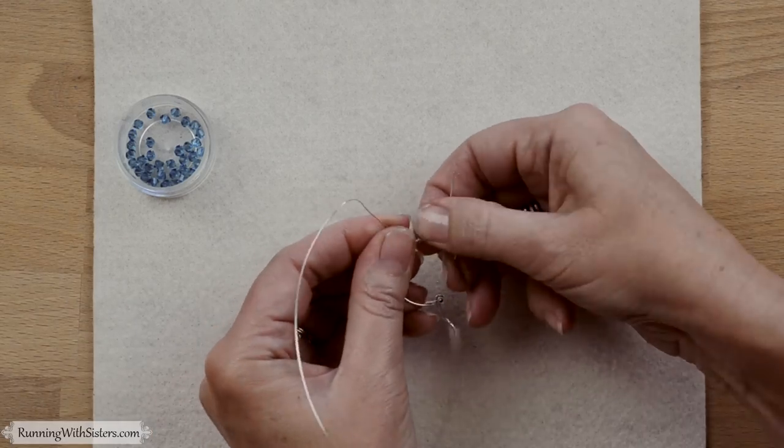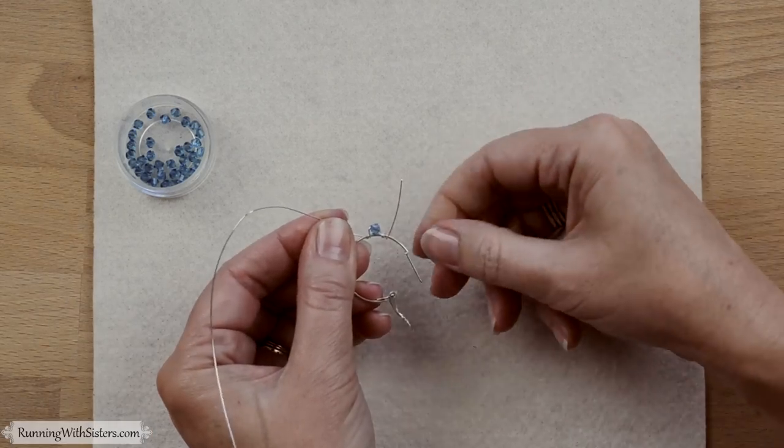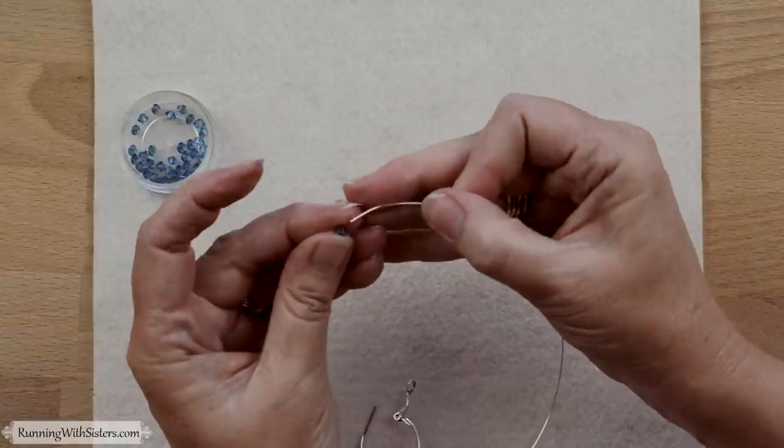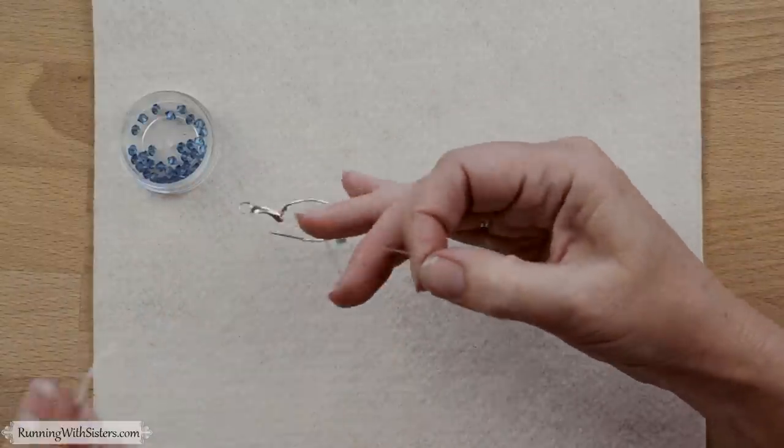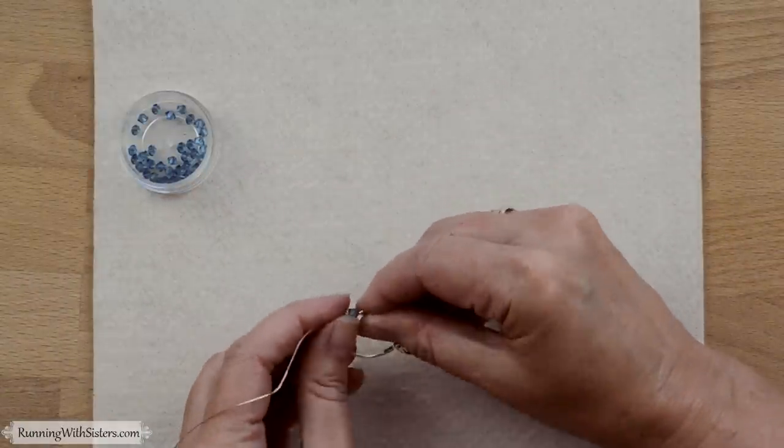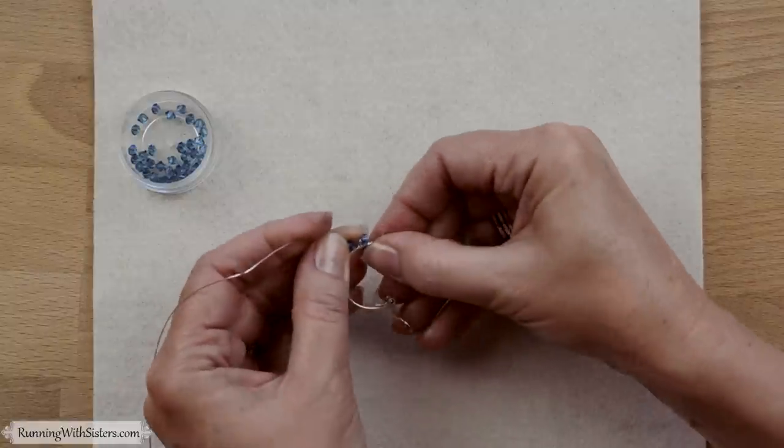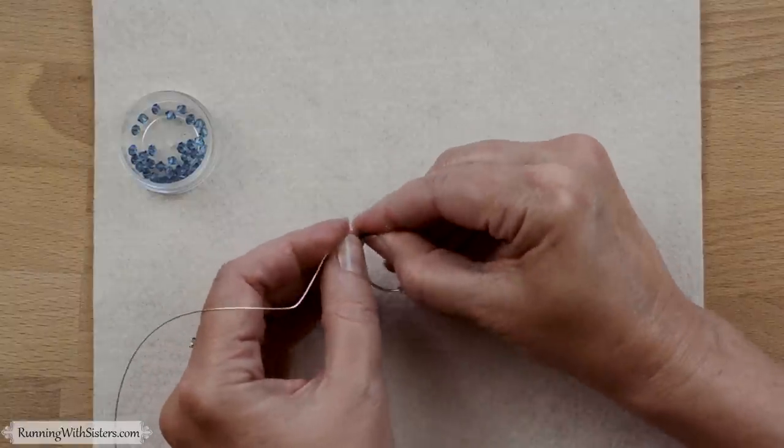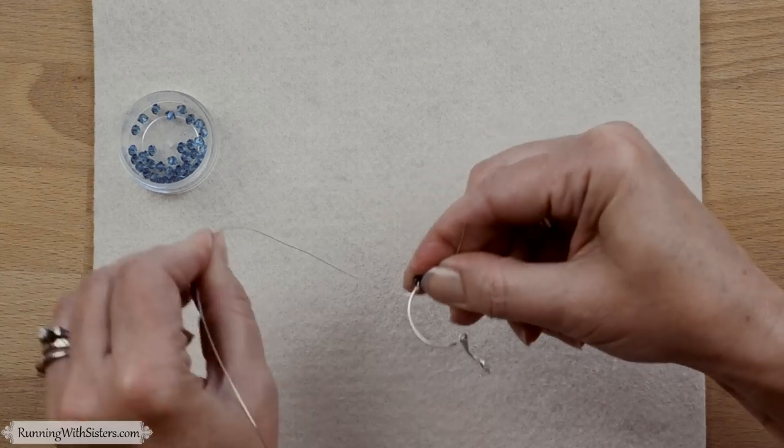And then I can just push the bicone into place where I want it and add another bead after that. So there are two wraps between each of the bicones. And this one's sitting just the same way where the flat side is up against the earring and then I go around it two times. One, two.